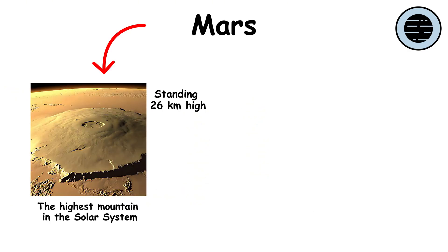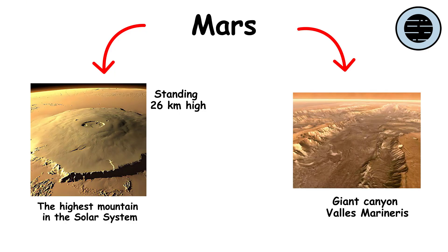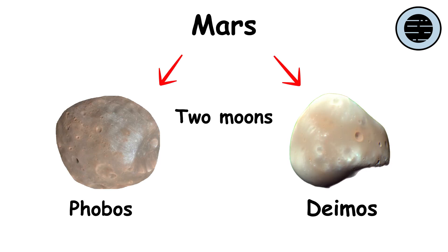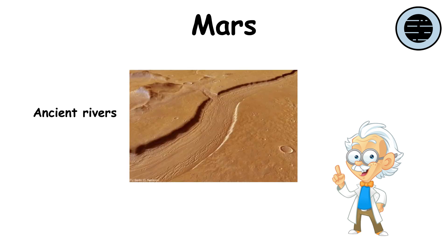Mars has the highest mountain in the solar system, Olympus Mons, standing 26 kilometers high, and the giant canyon Vales Marineris, stretching over 4,000 kilometers. Mars' two moons, Phobos and Deimos, resemble asteroids. Scientists have found evidence of ancient rivers, and there is ice beneath the surface.